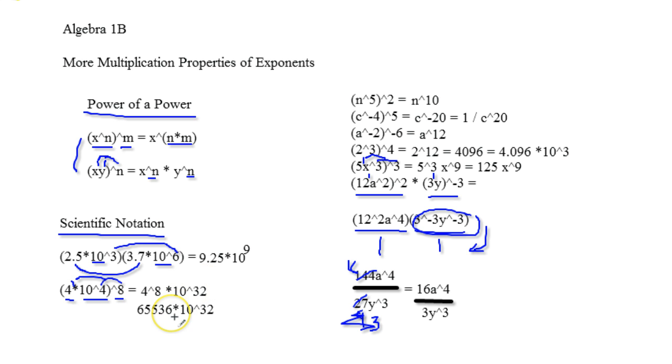So if you remember, scientific notation can't be like this, so we need to move the decimal 1, 2, 3, 4 spots. So we add 4 to the 32nd. So this becomes 6.5536 times 10 to the 36th.